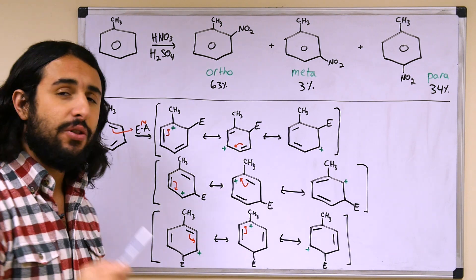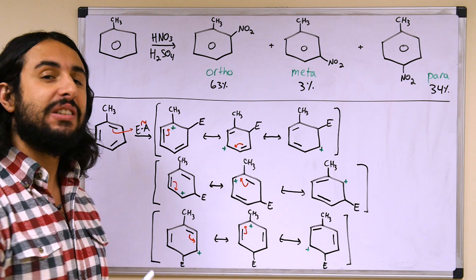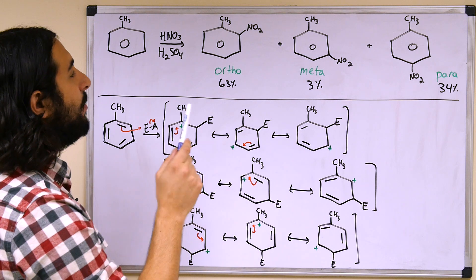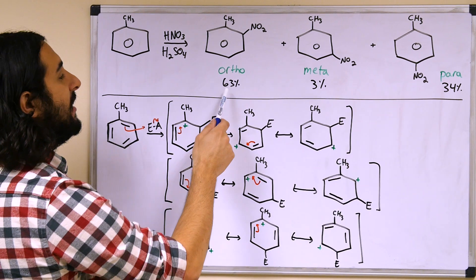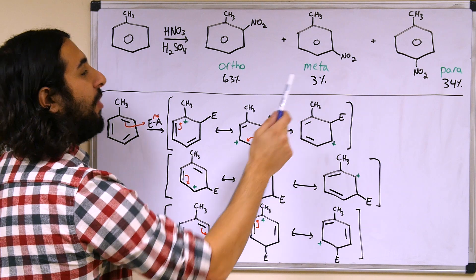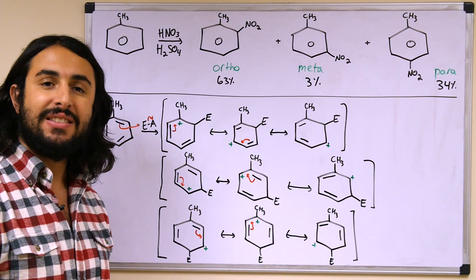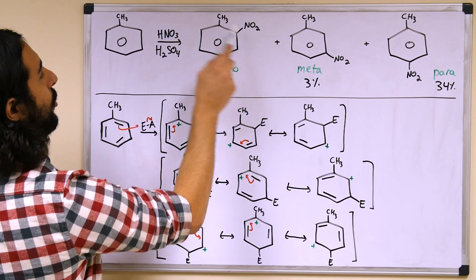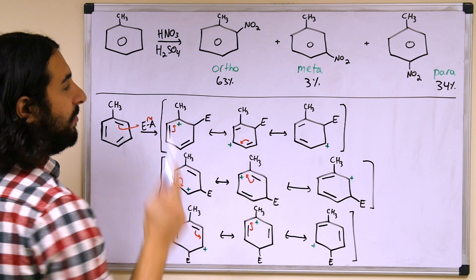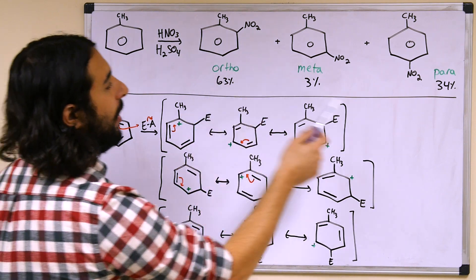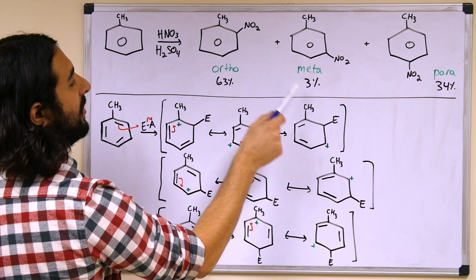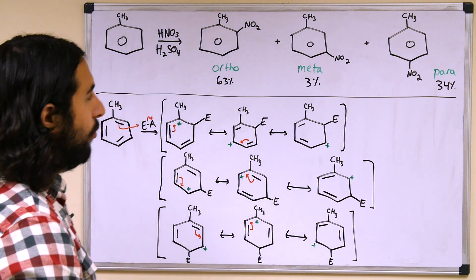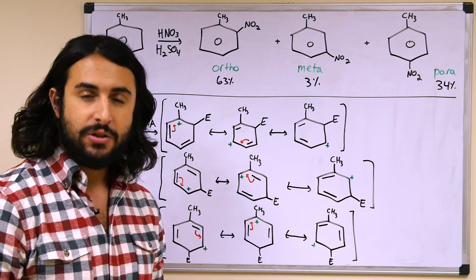There seems to be a strong regioselectivity here. Looking at the relative abundance of products for the nitration of toluene, we see 63% ortho, 3% meta, and 34% para. That should seem strange — there are five possible spots, two of which are ortho, which explains a lot of that product. But there are also two meta positions, and we get almost no meta substitution. We want to understand why.